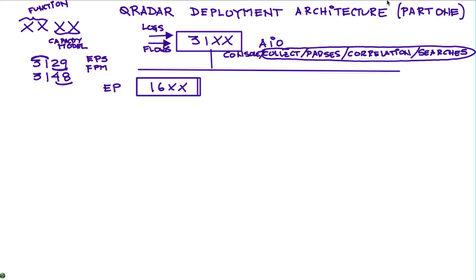You can also do the similar thing with flows. Let's say that you exceed the number of flows that you are collecting then you can deploy a 17xx which is a flow processor, or you can even have a combined event processor plus flow processor which is an 18xx device.